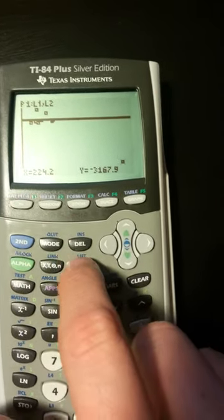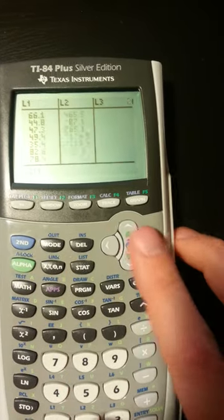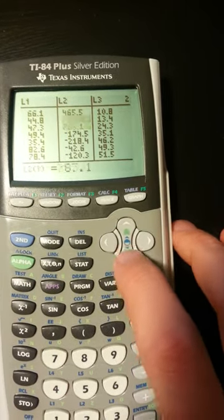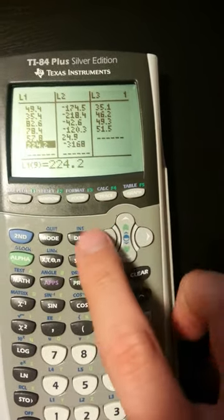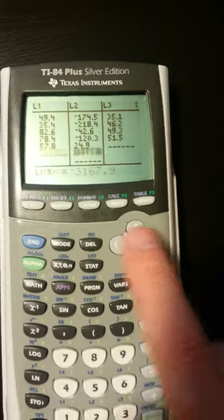I go to stat, edit, and look for that outlier, 224, negative 31. It's the last one. To get rid of that, I hit delete, delete.